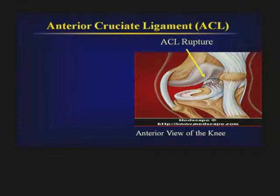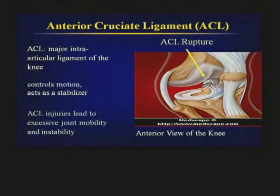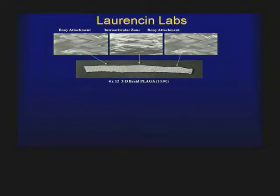The translational challenges are many, but this needs to be part of the arsenal. I'm an orthopedic surgeon, engineer, and sports medicine physician, and a lot of our focus has been on the ACL — a major interarticular ligament of the knee that controls motion and acts as a stabilizer. ACL injuries lead to excessive joint mobility and instability. I'm going to summarize about 15 years of work, and one of the real leaders in moving this forward was Helen Liu. She arrived the first day we got the grant from NIAMS to fund our ACL work.